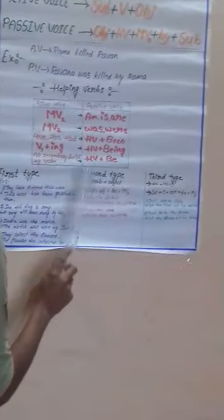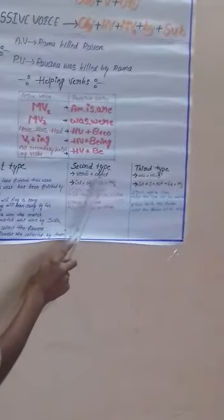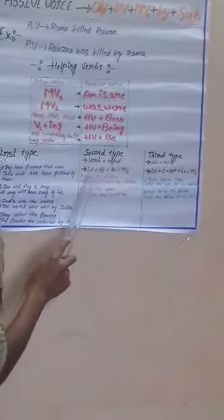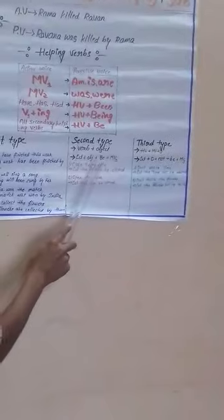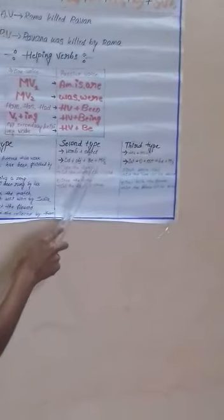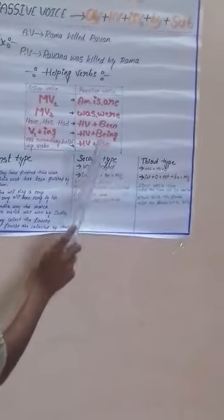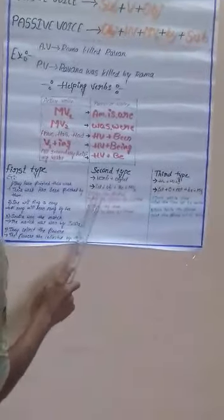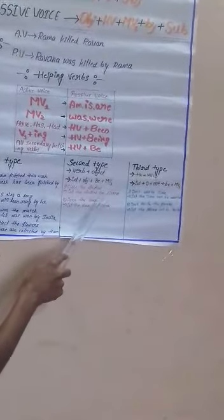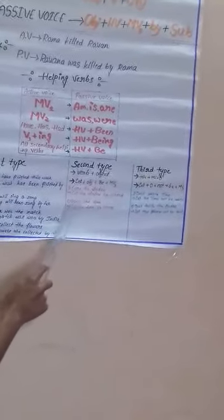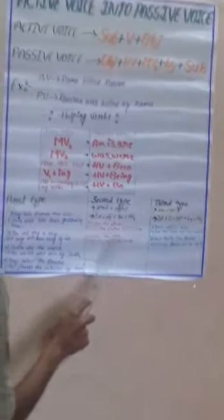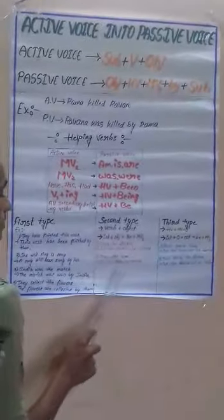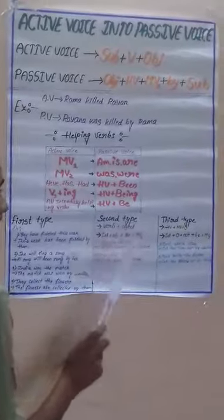Second type — this is equal to verb plus object. Next: let plus object plus be plus main verb third form. Example: Close the window. Passive: Let the window be closed. Second one: Open the door. Passive: Let the door be opened.